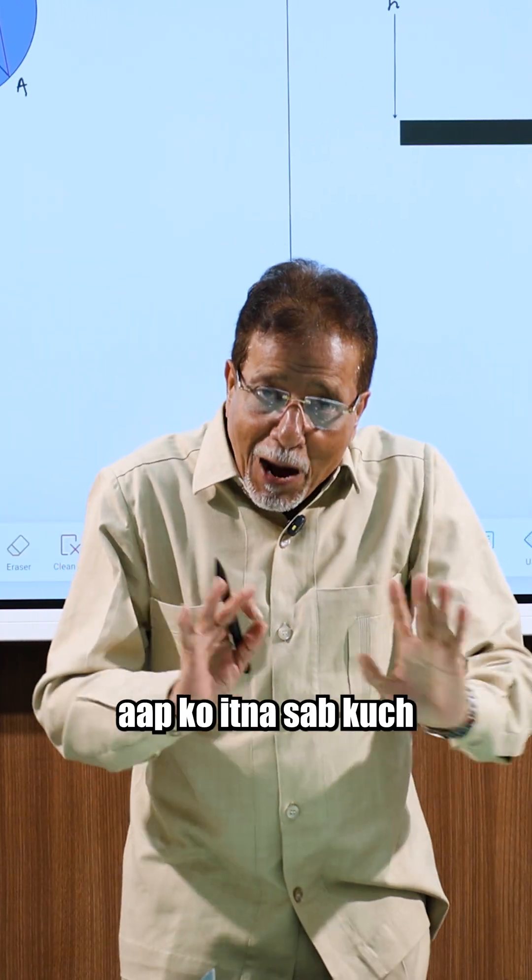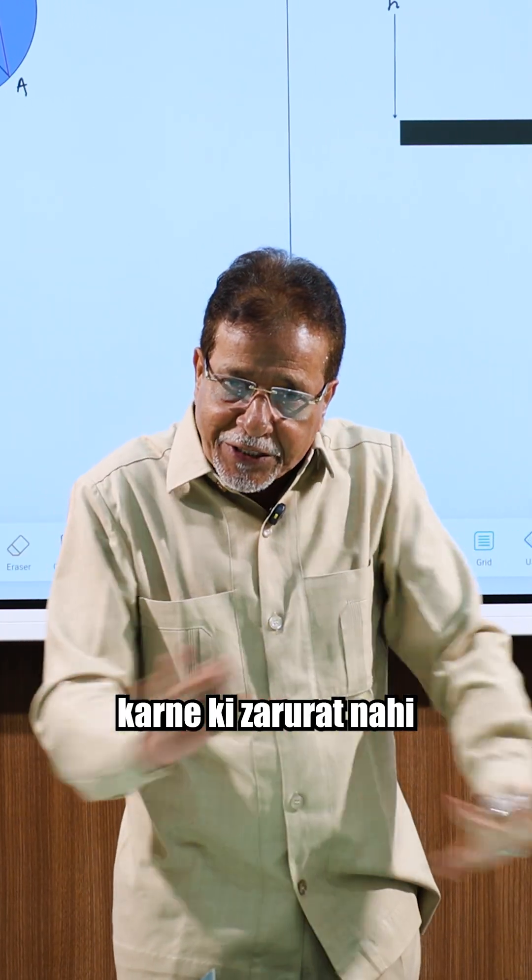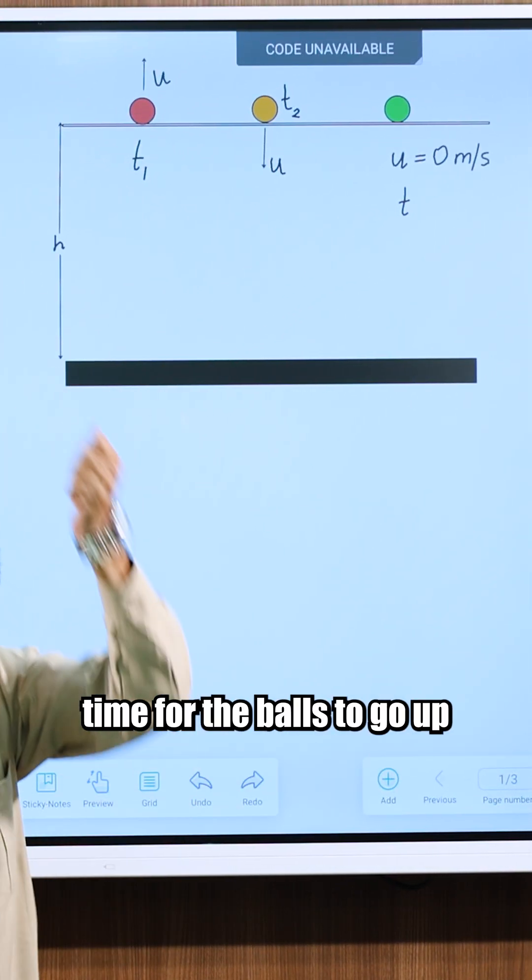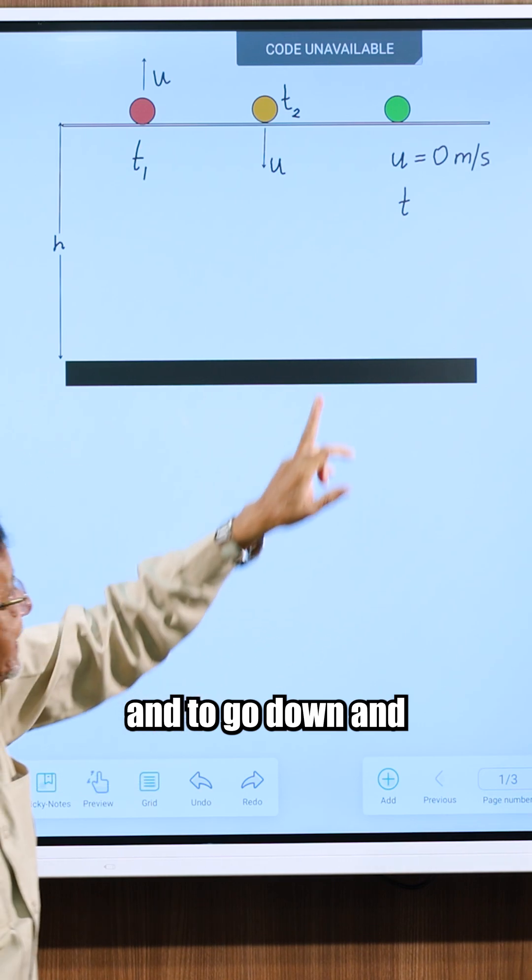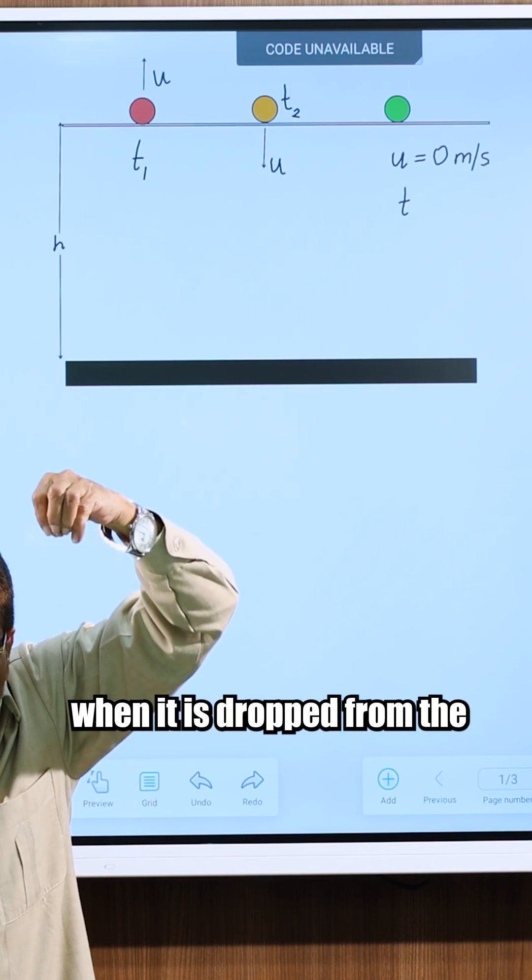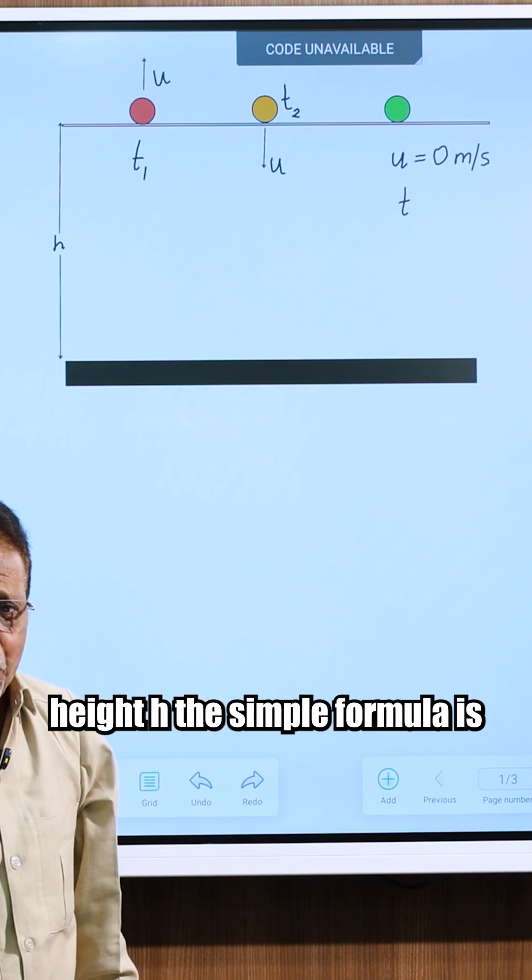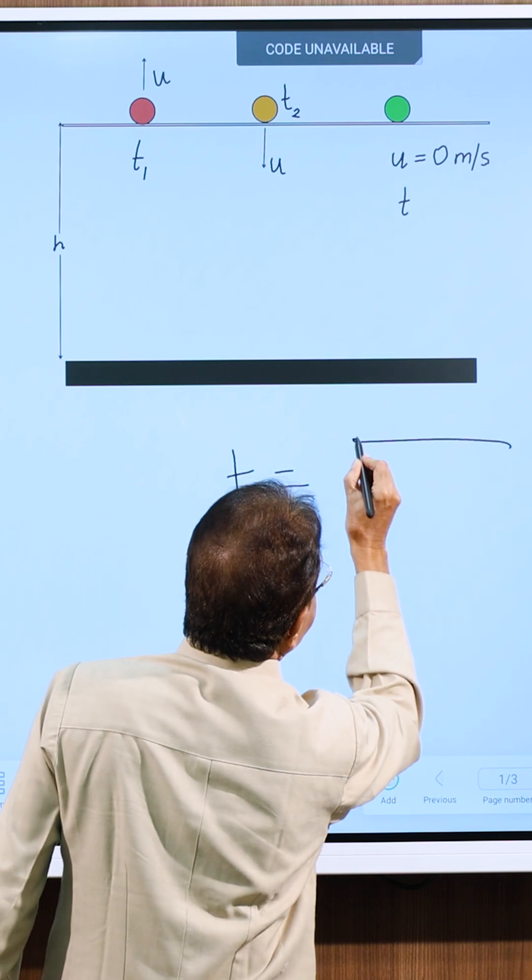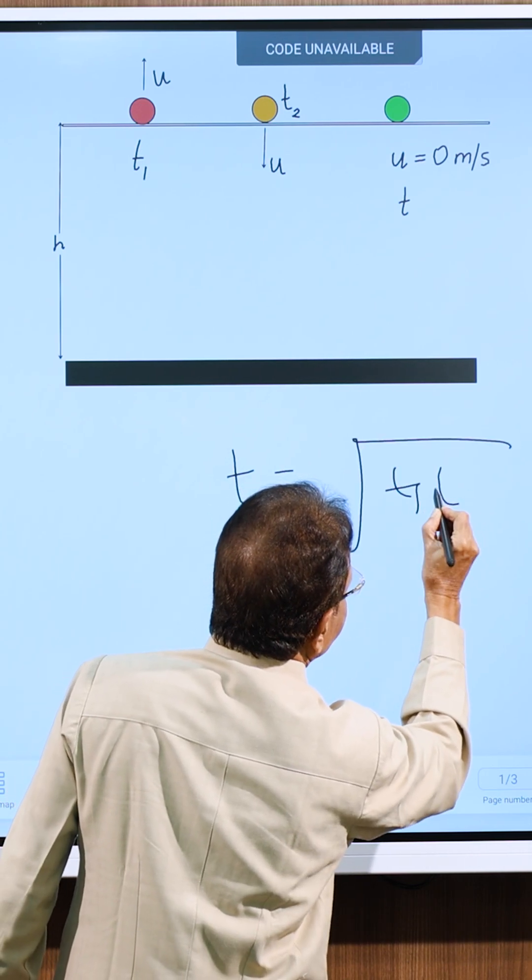But you need to do everything like this. Just if T1 and T2 are the time for the balls to go up and to down and T is the time taken by the ball to reach the ground when it is dropped from the height. The simple formula is T is equal to root of T1 into T2.